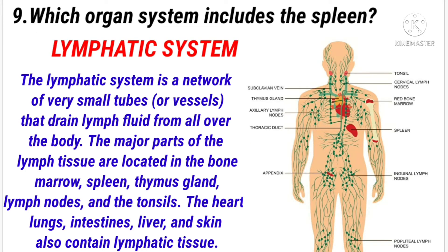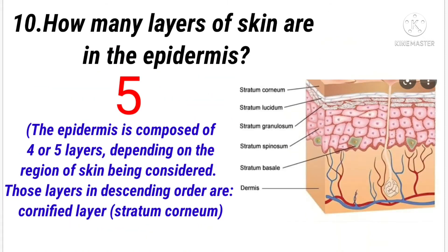Which organ system includes the spleen? Answer: Lymphatic system. How many layers of skin are in the epidermis? Answer: 5.